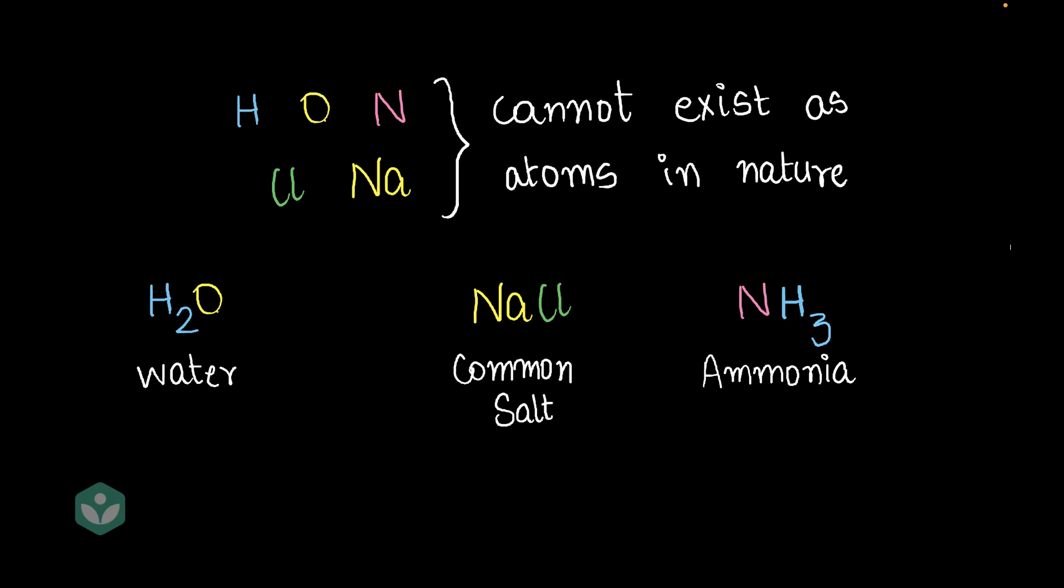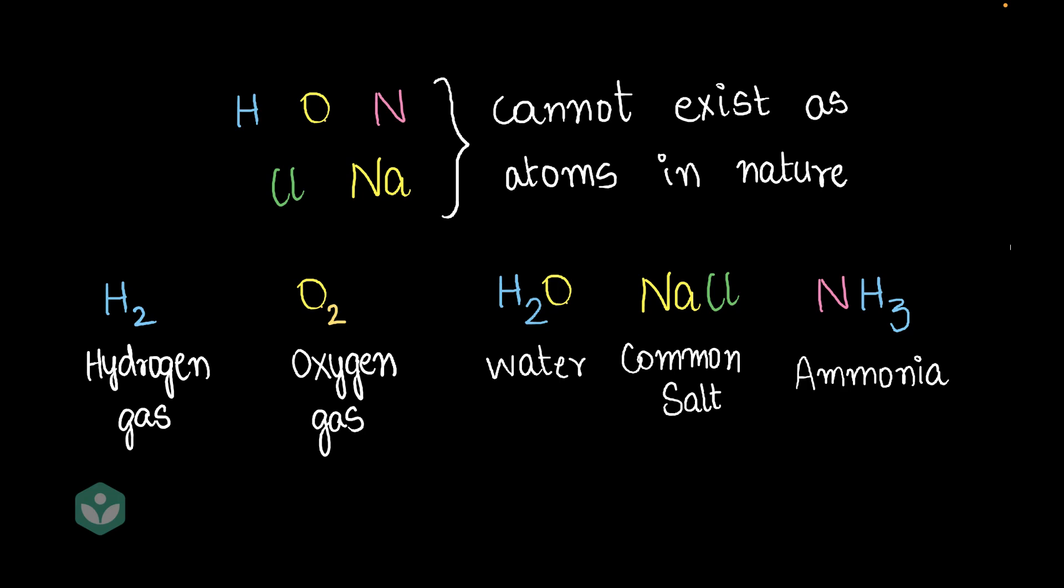Now you might be wondering, wait a minute, I've heard of hydrogen gas, I've heard of oxygen gas, are they not independent atoms of oxygen and hydrogen? Well, actually no. Oxygen gas and hydrogen gas are actually molecules of oxygen, molecules of hydrogen. This is two atoms of hydrogen forming a molecule of hydrogen gas. So that's how hydrogen gas, oxygen gas, or even nitrogen gas or chlorine gas exist in nature.